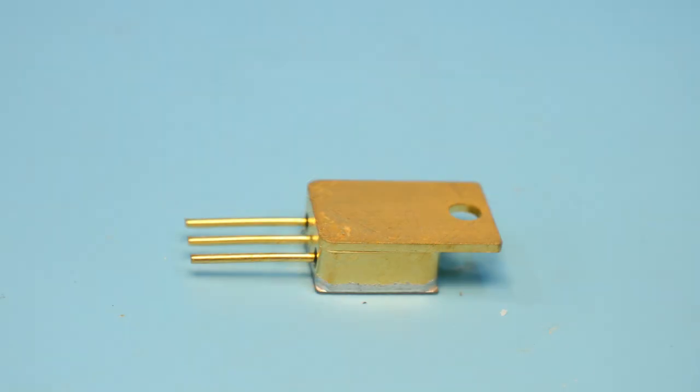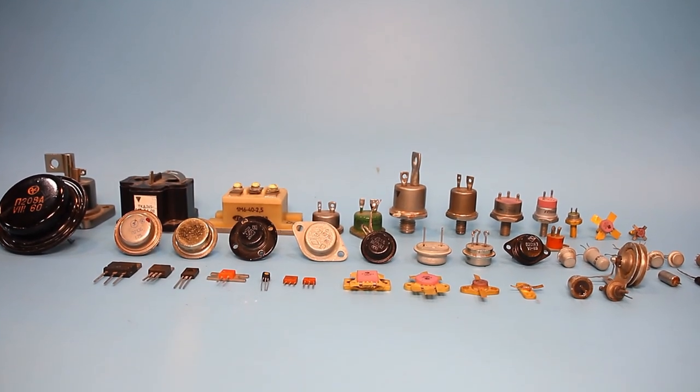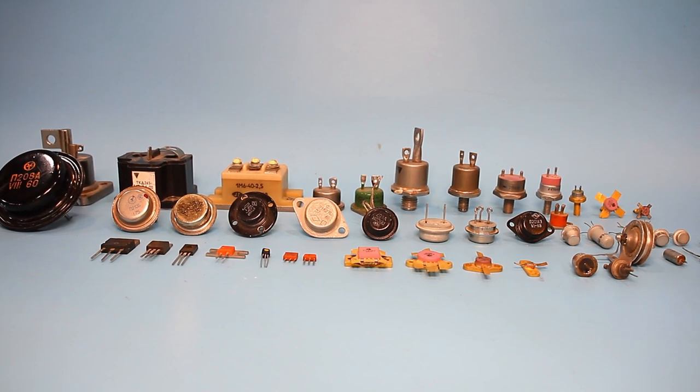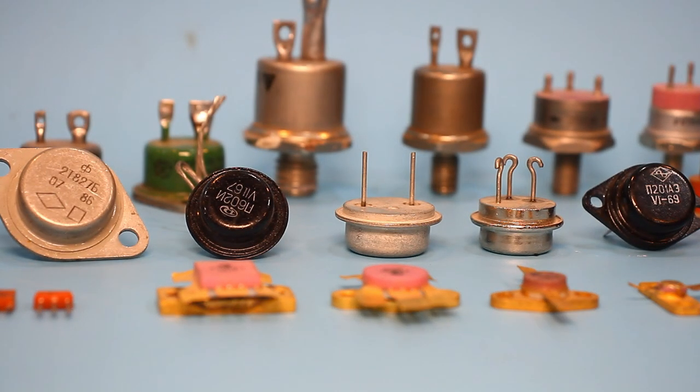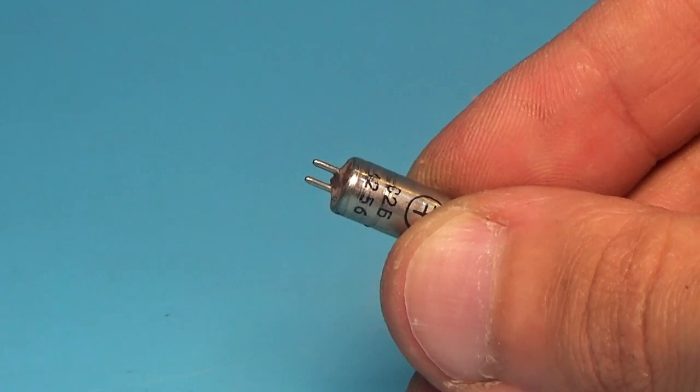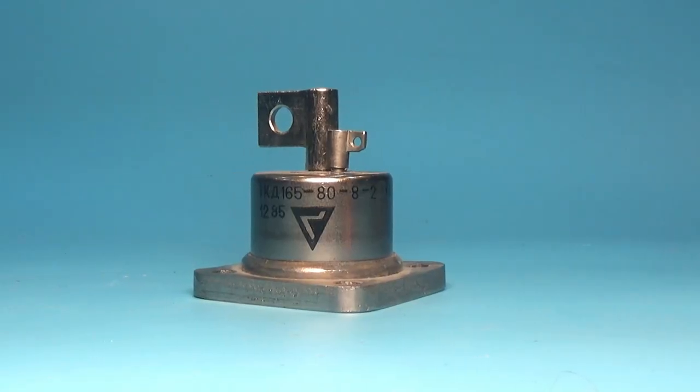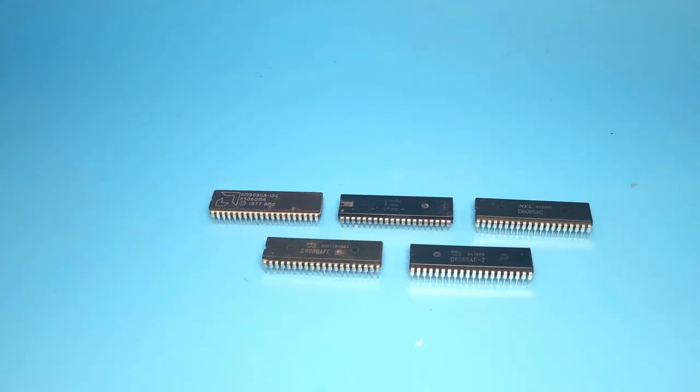The second half of the 20th century is a key stage in the development of electronics. It was then the foundation of the modern world was laid. The lamp technology began to be replaced by semiconductor technology, first germanium, then silicon, microprocessors were developed, and on their basis, the first serious computers.